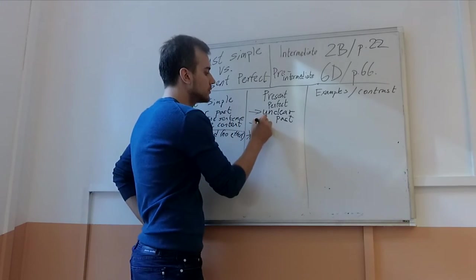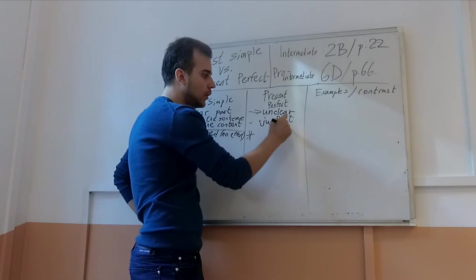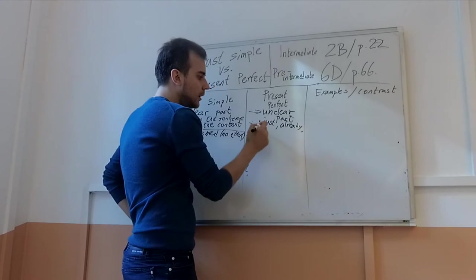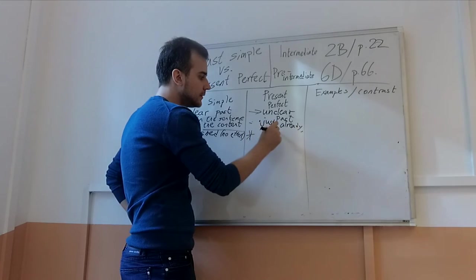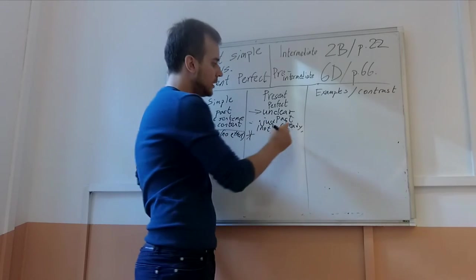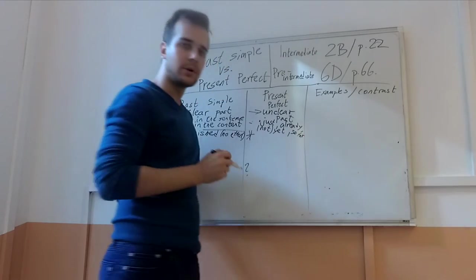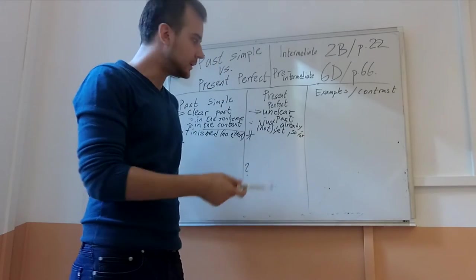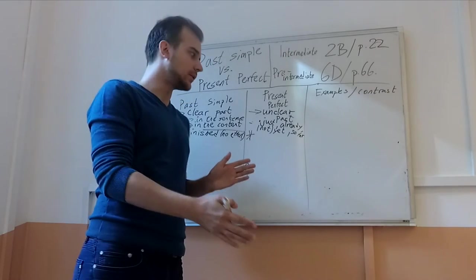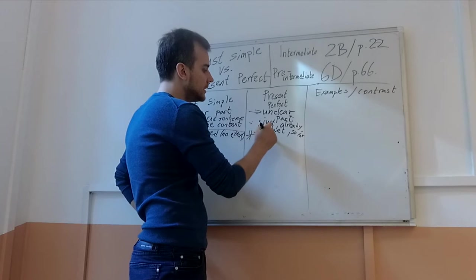So for example, we can use the words like just. Already. Then I can say not yet. Then I can say so far, and so on. So far means up until now, up to this time. It means from the past until now something has or hasn't happened.